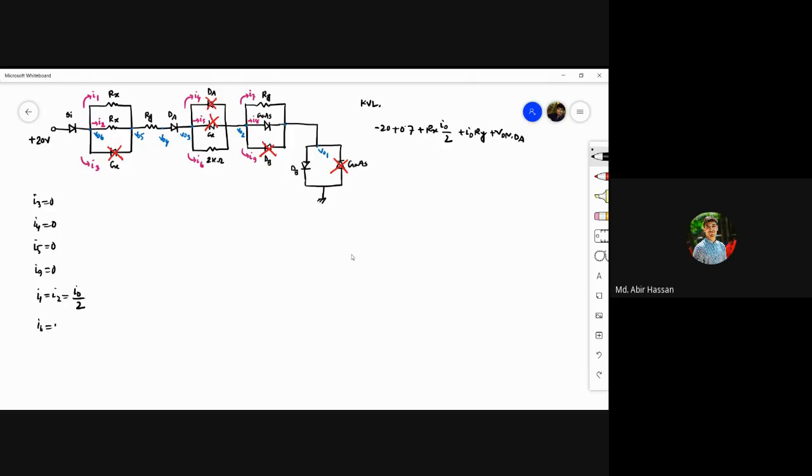Then i6 - i6 is directly i0. So plus i6, plus 1.2, plus Von of dv equals zero. This is the complete KVL equation.